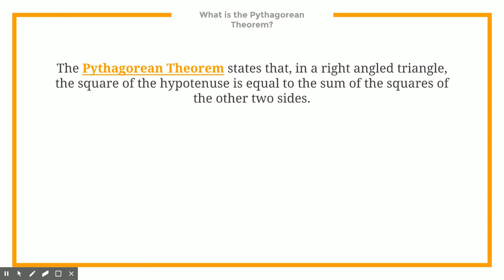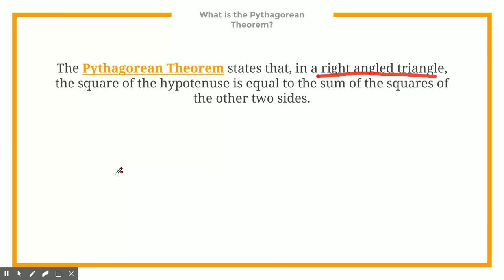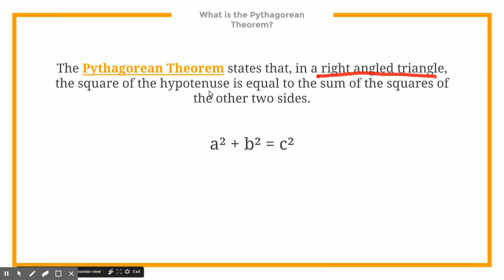Now the Pythagorean theorem states that in a right angle triangle — and it's important to note that this only works for right angle triangles — the square of the hypotenuse, the longest side, is equal to the sum of the squares of the other two sides. That formula looks like this: a squared plus b squared equals c squared, where c is the hypotenuse.